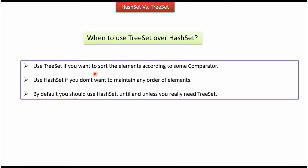If you want to sort elements according to some comparator, then you can go for TreeSet. If you don't want to maintain any insertion order, then you can go for HashSet. By default, it will be good to use HashSet. We should not use TreeSet unless it is really needed. And that is about the difference between the HashSet and TreeSet. Thanks for watching.